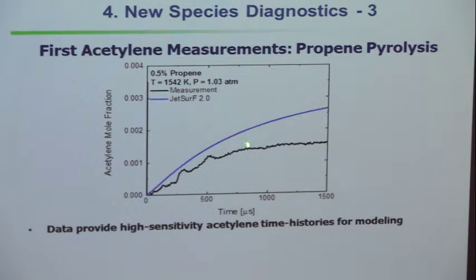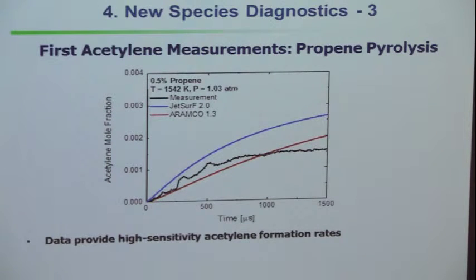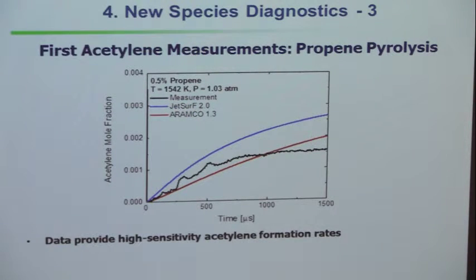The initial slope isn't too bad, but there's a discrepancy at later times — probably additional reactions missing in the JetSurf model. We also took the Aramco model from Saudi Arabia, which is really quite different from JetSurf. Today these detailed models from different laboratories are significantly different from each other, and both are a little different from the experiment. What happens is you make comparisons and gradually make advances.